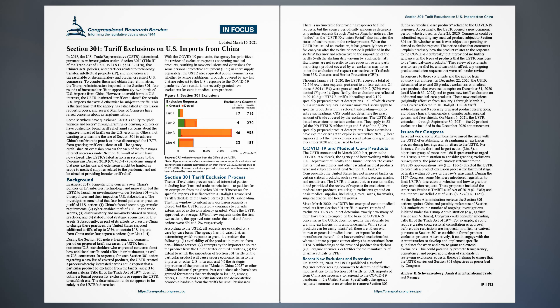The USTR exclusion portal also indicates the status of each request in the review process. When the USTR has issued an exclusion, it has generally been valid for one year after the exclusion notice is published in the Federal Register and retroactive to the imposition of the tariffs, with the starting date varying by applicable list. Exclusions are not specific to the requester, so any party importing a product covered by an exclusion may do so under the exclusion and request retroactive tariff refunds from U.S. Customs and Border Protection (CBP). Through January 31, 2020, the USTR received a total of 52,746 exclusion requests pertinent to all four actions.